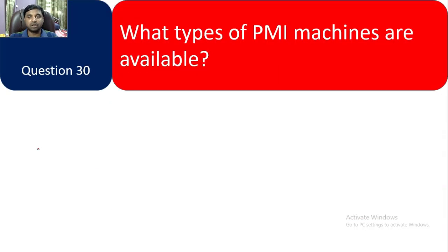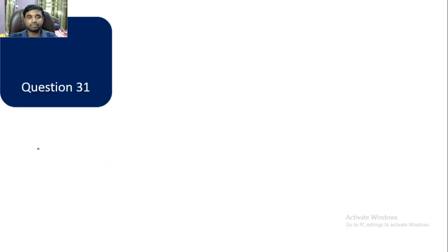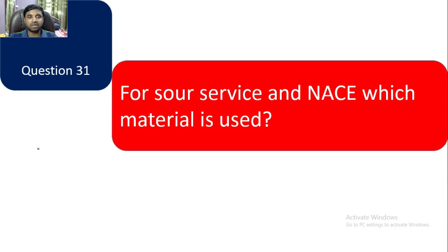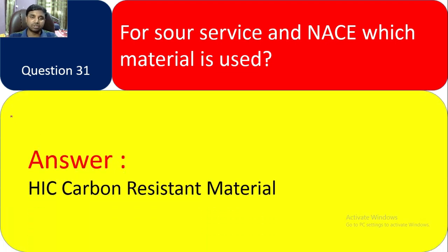Question 30: What type of PMI machines are available? Answer: X-ray fluorescence and optical emission spectrography. These are the available machines in the market for PMI. Question 31: For sour service and NACE, which material is used? Answer: HIC (hydrogen-induced cracking) resistant carbon material is always used for NACE or sour service.